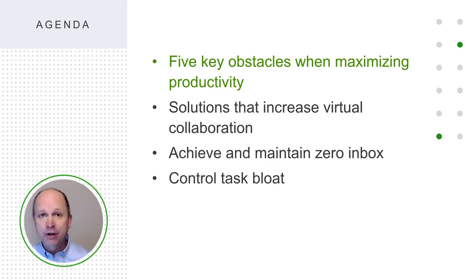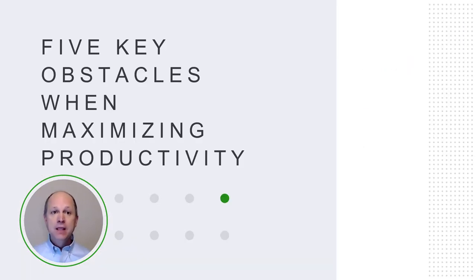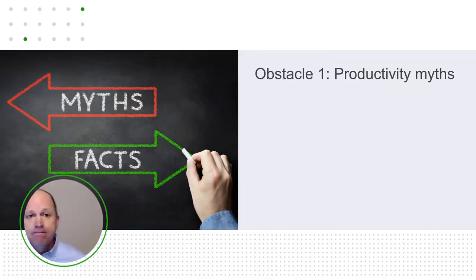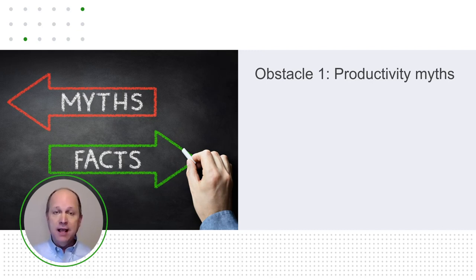Our journey to maximizing productivity begins with those five key obstacles. We're going to address each obstacle one at a time, talk about why it's important to overcome it, and then talk about how to overcome it. The first key obstacle is the productivity myth obstacle. There are a few key productivity myths that we all tend to believe — they're pervasively accepted, and they distract or prevent us from maximizing productivity in our lives and our practices.